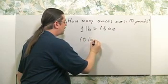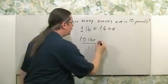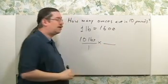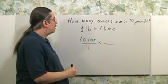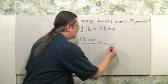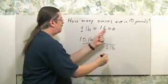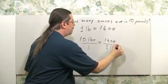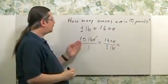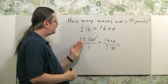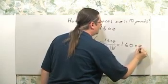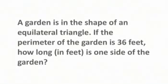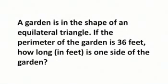To do that, write down the 10 pounds over one as a fraction, then multiply by a conversion fraction derived from the conversion equation. We want to cancel the pounds, so it goes in the denominator: one pound equals 16 ounces. Now cancel and perform the multiplication — 10 times 16 is 160 ounces. That is our answer.